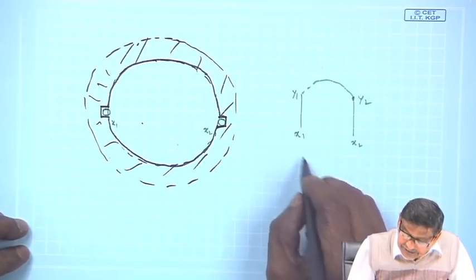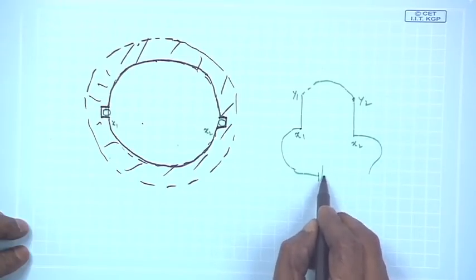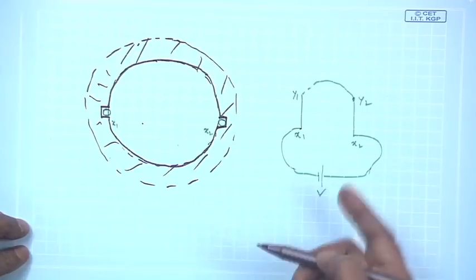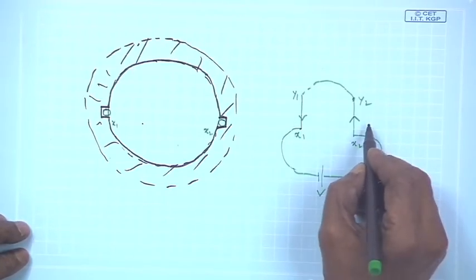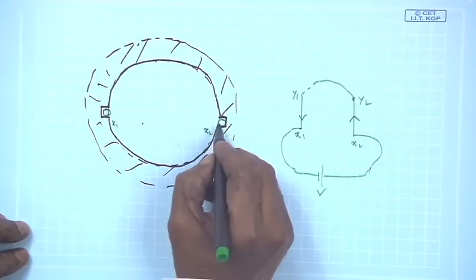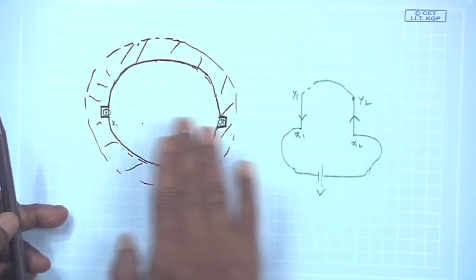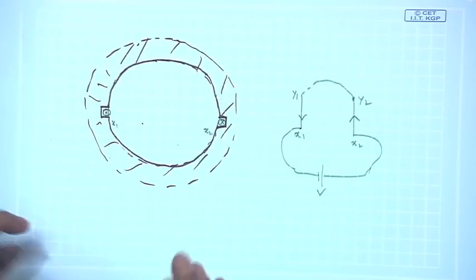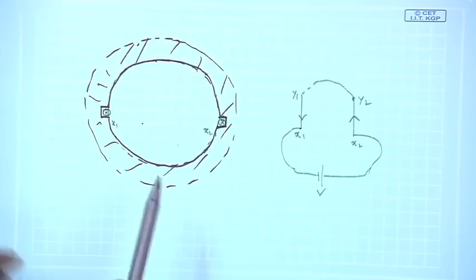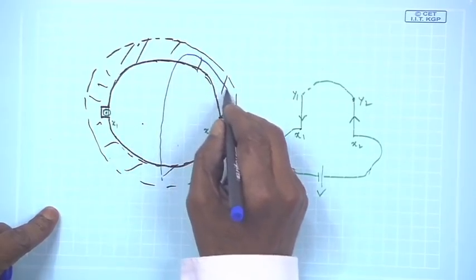Now suppose you excite this coil by connecting a battery across x1 and x2 — some DC voltage. Current will flow like this, and if this current flows then in this cross-sectional diagram I must show it as cross and dot. You must have a clear idea of this: current is flowing like this. I have not drawn the rotor yet; I am just trying to understand how the field is produced. The stator is carrying current and it will produce a magnetic field as you can see here.